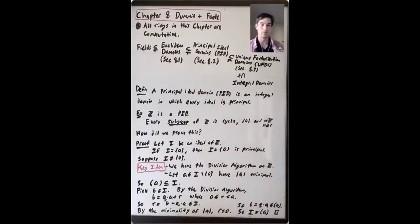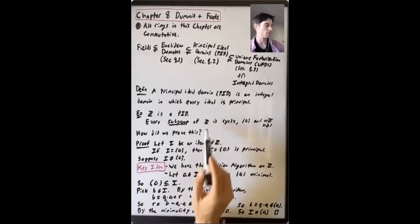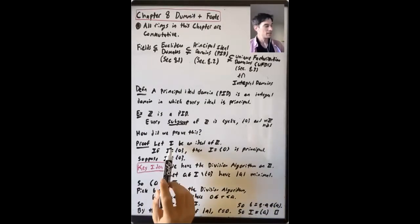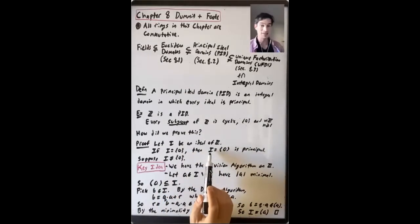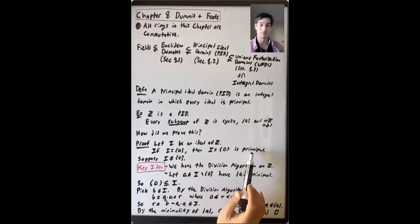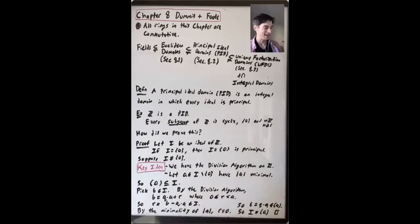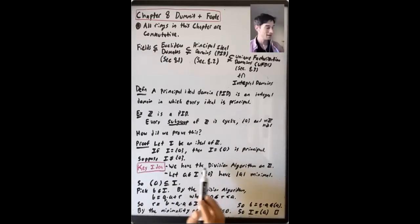But how did this argument actually work? What was the main thing that made it work? Let's prove it again, phrased in terms of ideals. Let I be an ideal of Z. If I is trivial, then it is the principal ideal generated by zero, so it is principal. So let's take I to be a non-trivial ideal. The key idea involves two related things: we have the division algorithm on Z, and the division algorithm is the main tool we'll apply to complete this proof.